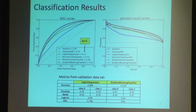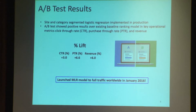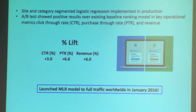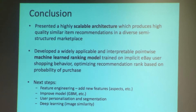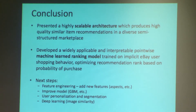Here are some classification metrics — a ROC and precision-recall curve — which look very good as offline metrics. But to see real-world performance, we ran A/B tests, and we have a strong improvement in lift and key operational metrics in terms of click-through rate, purchase-through rate, and revenue. We launched this model worldwide in January. To conclude, we made a highly scalable architecture to serve recommendations in an unstructured, semi-structured marketplace, and developed a widely applicable and interpretable machine learning ranking model. Next steps include feature engineering, better models, and deep learning.